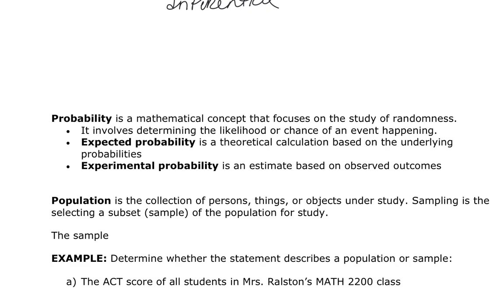Now let's look at some more words we need to define. Probability is the study of randomness. There are two types: expected or theoretical, and experimental. The real difference is that expected is something you can calculate. If you flip a coin you expect either heads or tails, so the probability of a head is 0.5 and a tail is 0.5. If you flip the coin more than once and observe the outcomes, that would be experimental probability. Over a large number of tosses — say 4,000 — the experimental probability should get closer to the expected probability of 0.5.